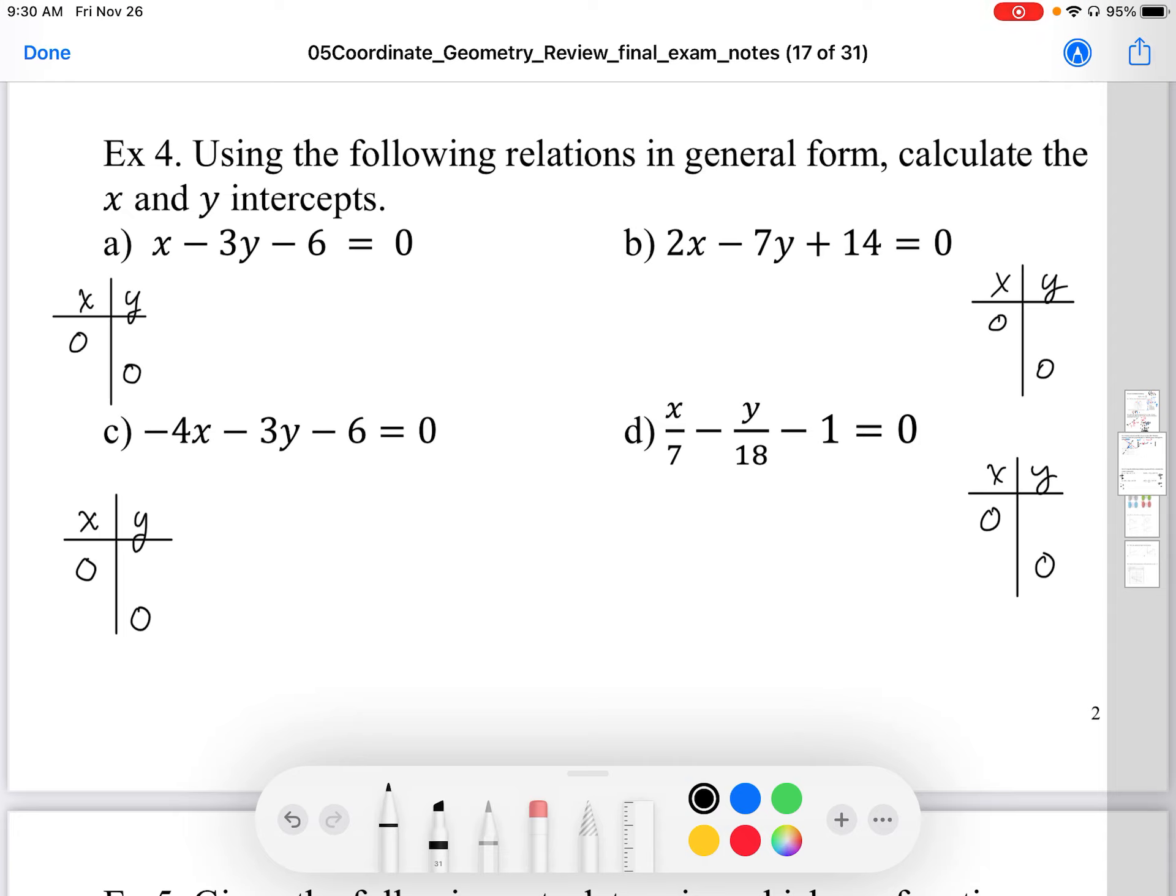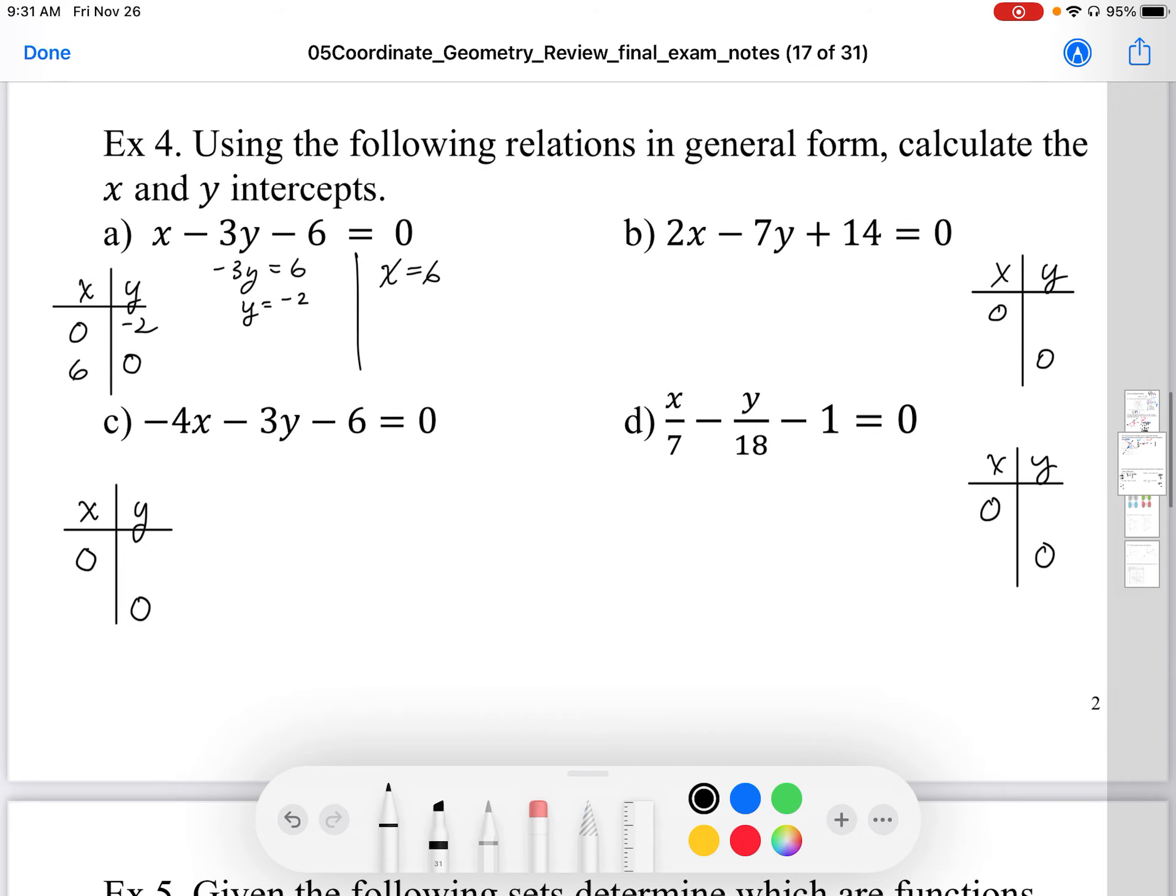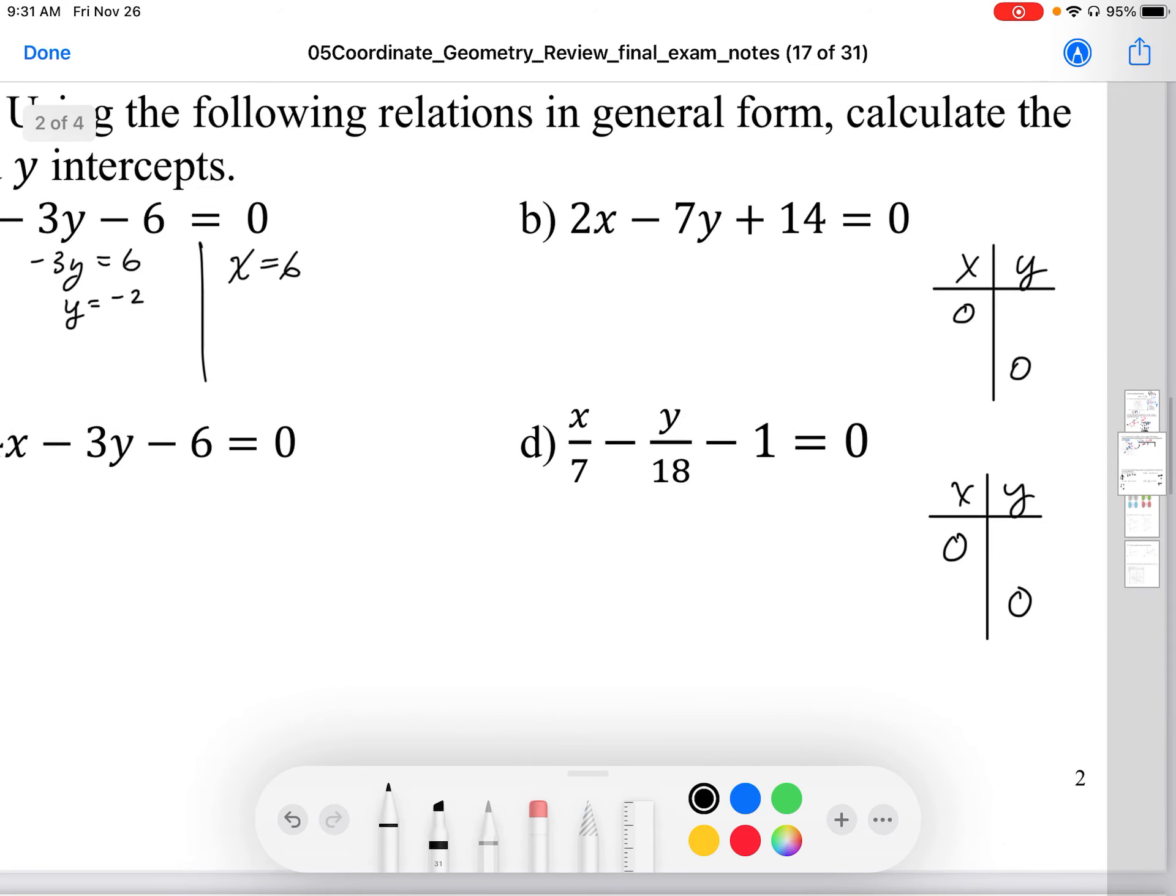I don't need to rearrange this into y equals mx plus b or anything like that, because the general form is actually set up nicely to calculate intercepts. So when I plug in x is 0, I'm going to end up with negative 3y, and I'm going to move the 6 over to that side. I divide by negative 3, I get y equals negative 2. So there is the y intercept. When I do the same for y, I'm going to plug in y is 0, I get x equals 6. So those are my intercepts—it's just a calculation of substituting in 0s into my equation for either x or y.